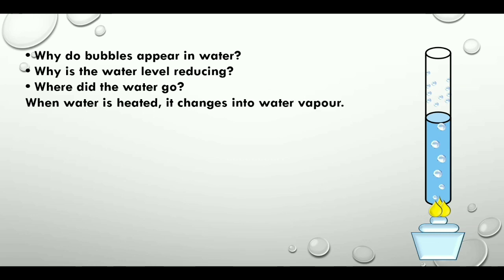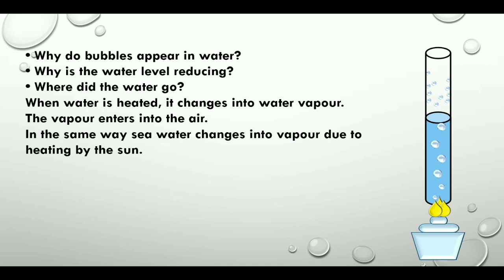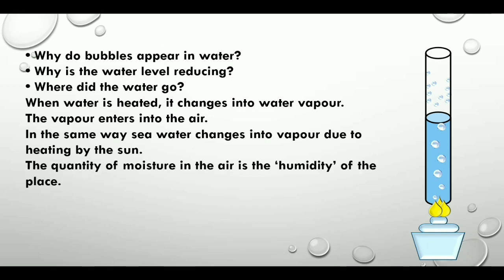When water is heated, it changes into water vapor. The vapor enters into the air. In the same way, sea water changes into vapor due to heating by the sun. The quantity of moisture or water vapor in the air is the humidity of that place.